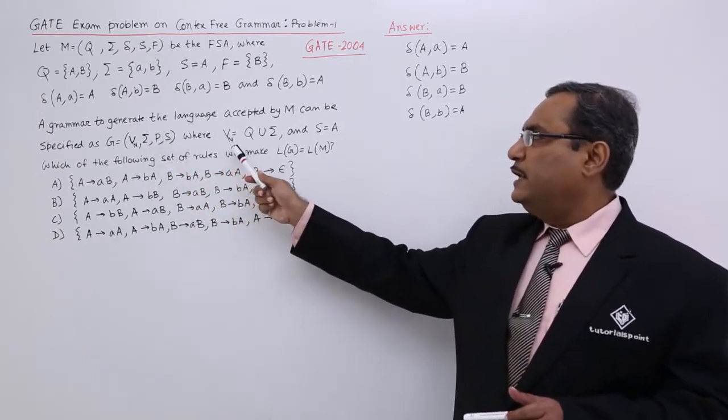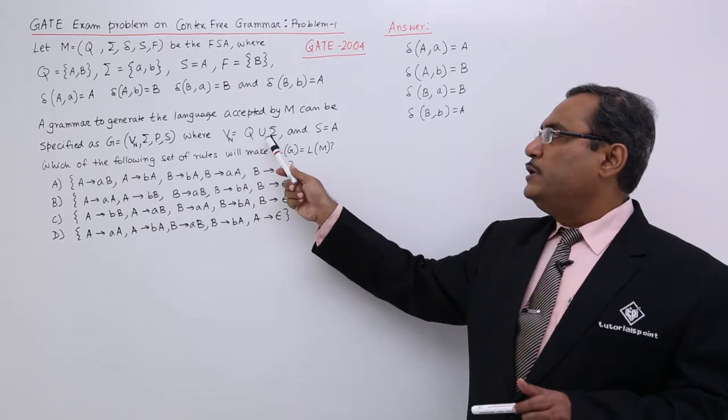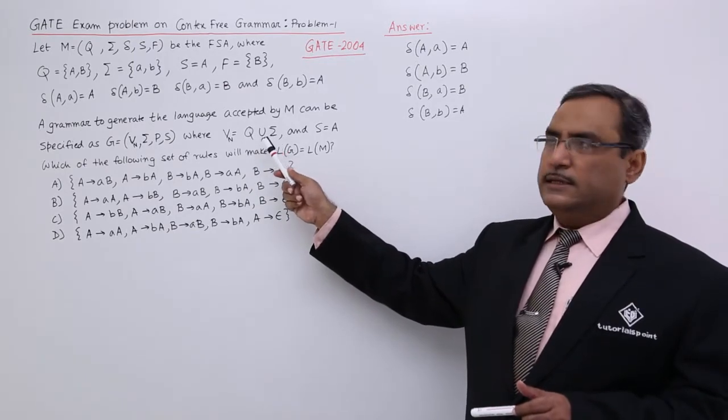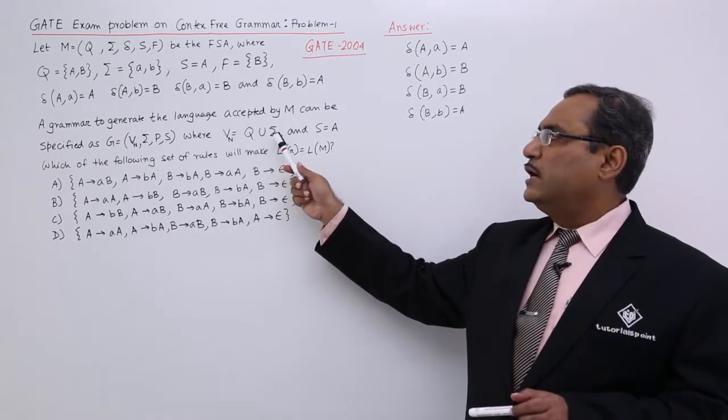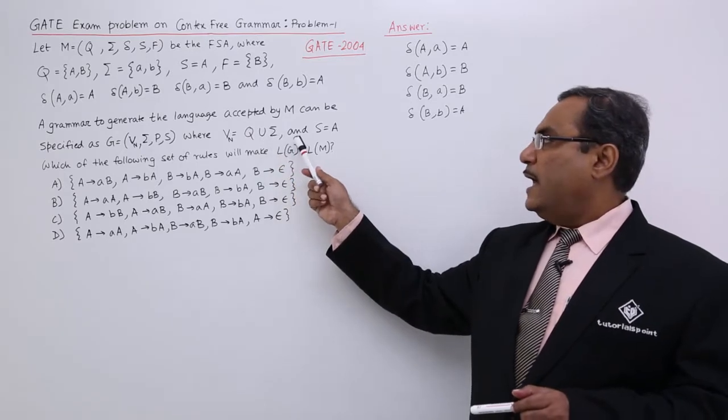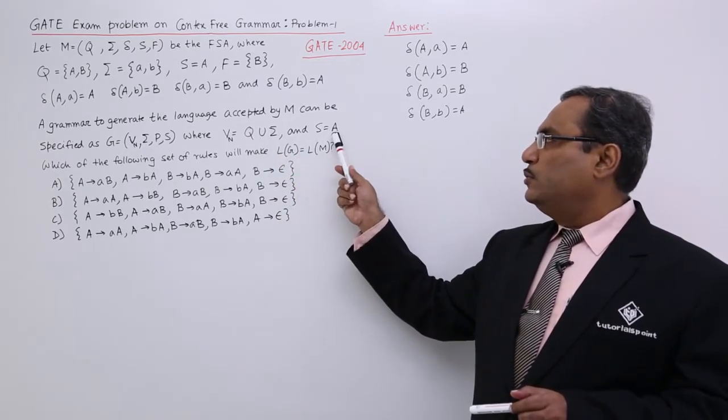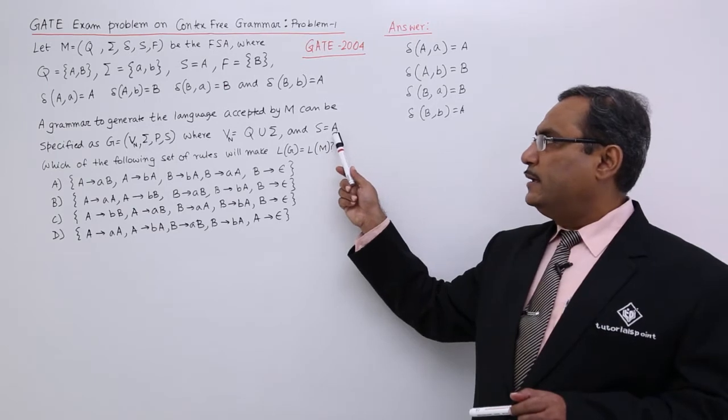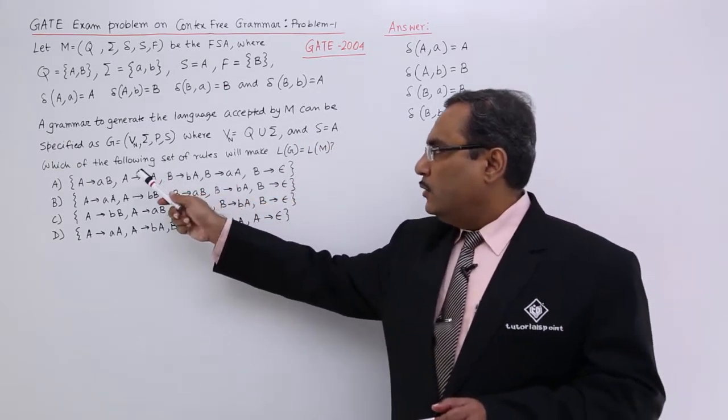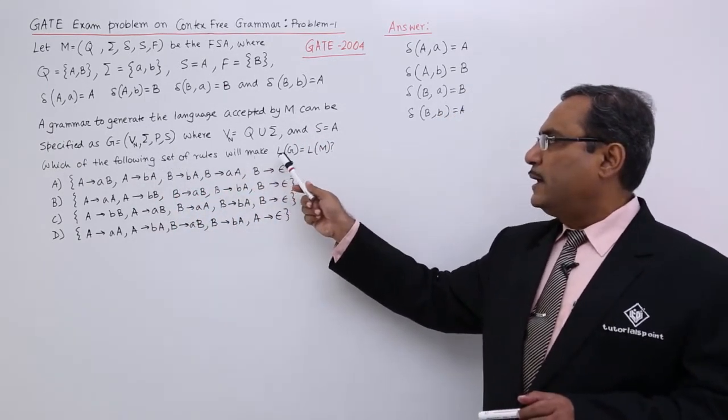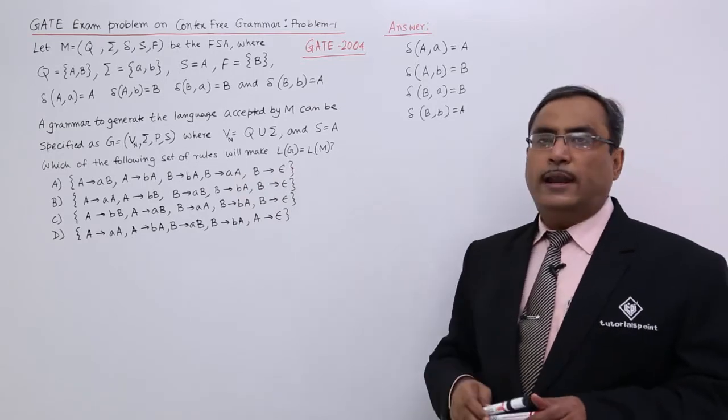Here it is V n sigma P S and V n is equal to Q union sigma. That is set of states union set of input alphabets and S is equal to A. That is the start symbol will be A, the initial state, and which of the following set of rules will make L of G is equal to L of M.